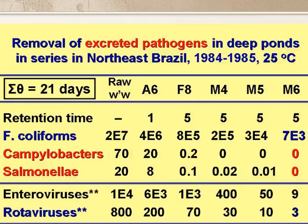The enteroviruses were reduced from 10,000 per 10 litres to just under 10 per 10 litres in the final effluent, and the rotaviruses from 800 per 10 litres to around 3 per 10 litres. These results show that when the effluent contained around 7,000 faecal coliforms per 100 ml, there were no Campylobacters, no Salmonella, and only very small numbers of viruses.